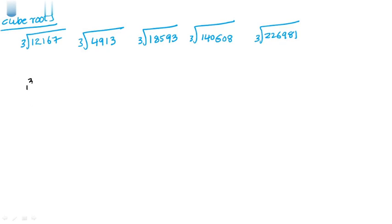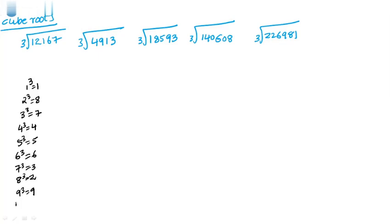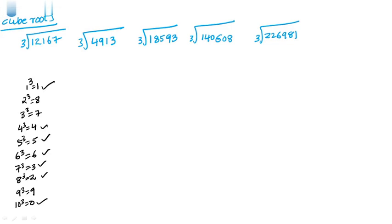Cube values table: 1 cube is 1, 2 cube is 8, 3 cube is 27 (units place 7), 4 cube is 64 (units place 4), 5 cube is 125 (units place 5), 6 cube is 216 (units place 6), 7 cube is 343 (units place 3), 8 cube is 512 (units place 2), 9 cube is 729 (units place 9), 10 cube ends in 0.